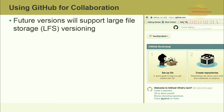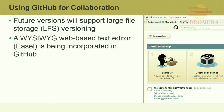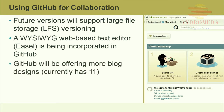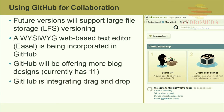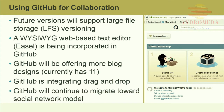Git large file storage will replace large files such as videos, audio files, and high-resolution pictures with a pointer inside Git. The actual contents of the file will be stored on a remote server such as GitHub Enterprise or GitHub.com. Other planned features include a what-you-see-is-what-you-get web-based text editor; Easel is being incorporated into GitHub. GitHub will be offering more blog designs — currently it only has 11. GitHub is also integrating drag-and-drop and will continue to migrate toward the social network model.